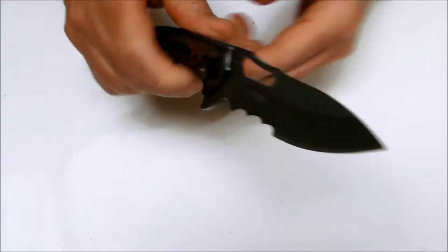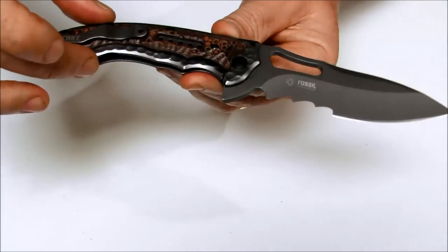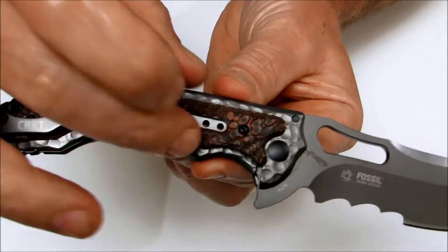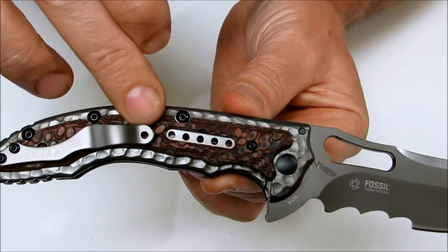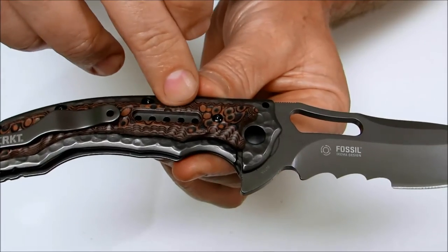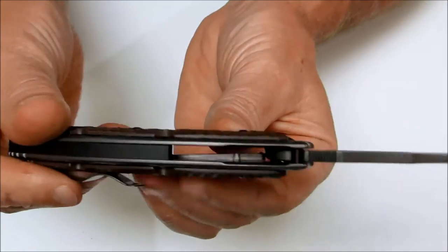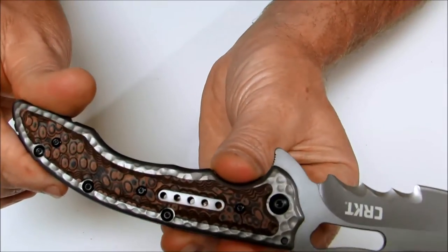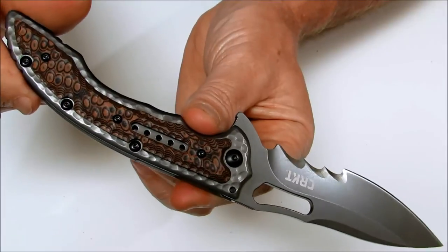This is a Flavio Icoma design, and it has stainless steel handles with nice fossilized machine work on there, as well as two-tone G10 scales that have the same machining pattern on them. You get a very good grip with this, and it has a unique, good-looking appearance to it.